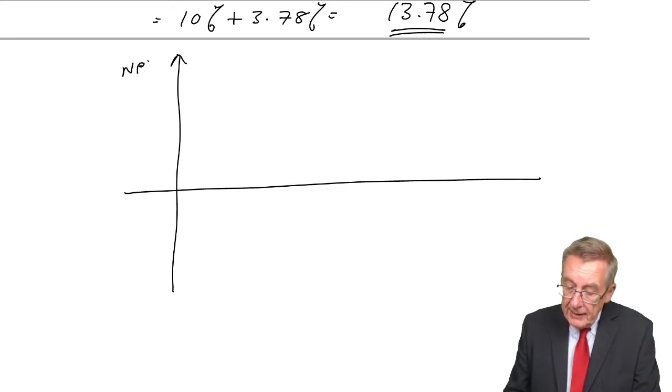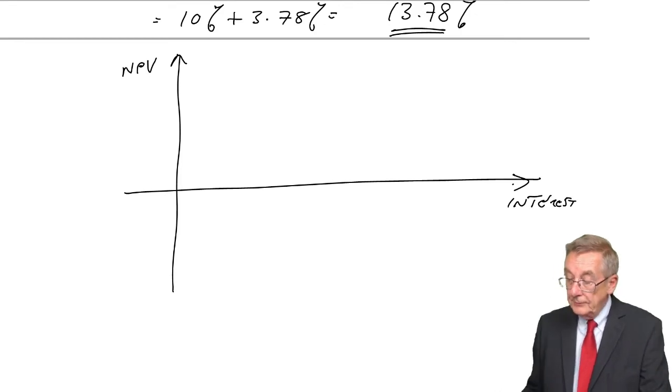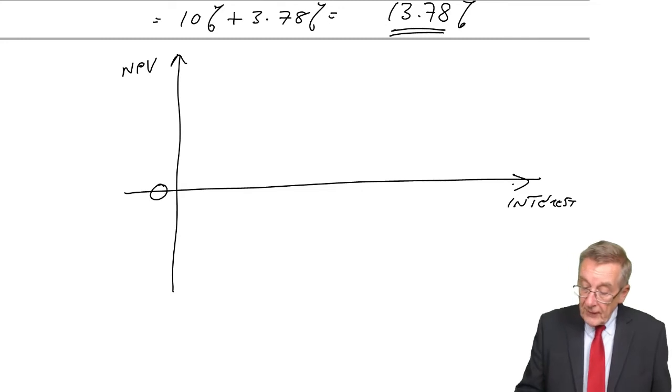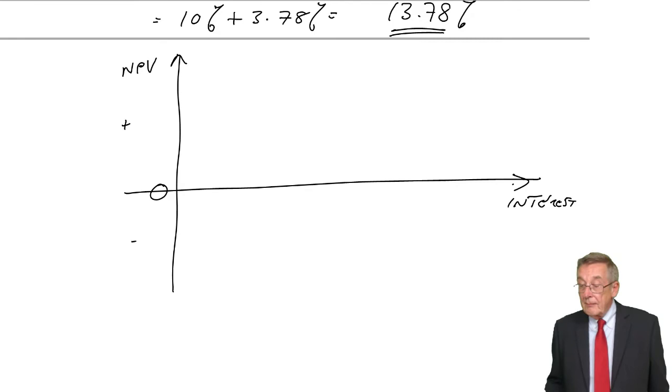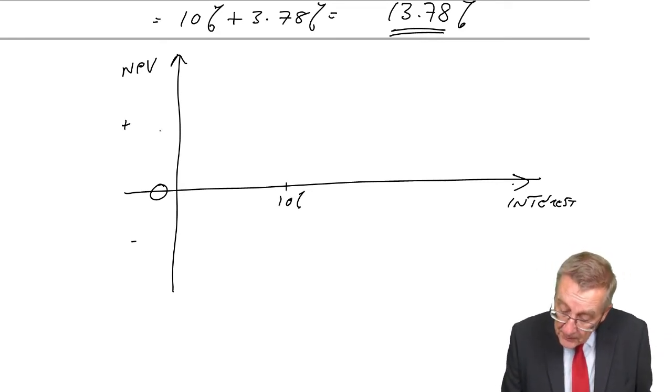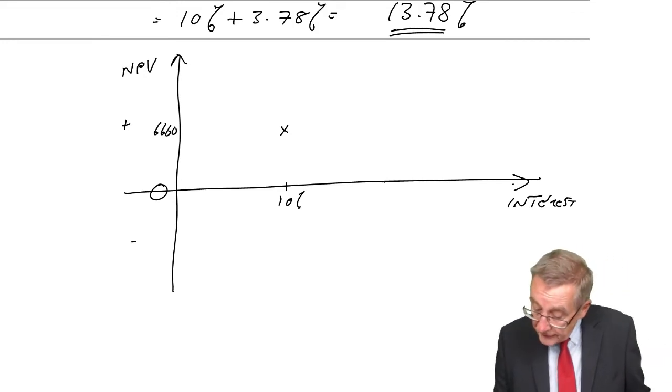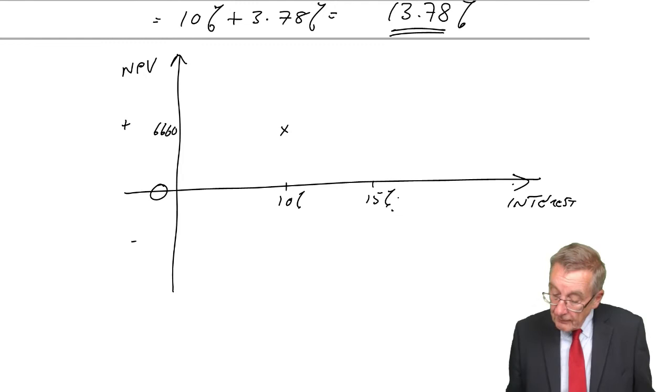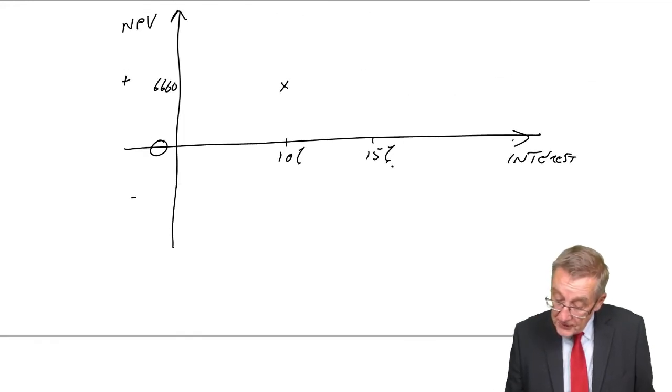Suppose you did a little graph of the NPV at different rates of interest. There's zero NPV. Here's where it's plus, where it's minus. We've done it at 10% and got plus 6,660. We then did it at 15%, we got minus 2,160.